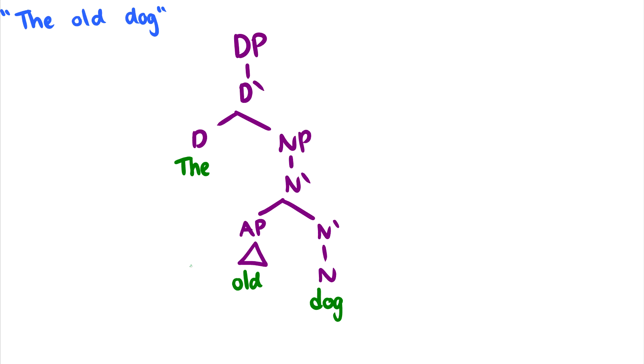And then everything else works just the same way as before. Again, let's remember that this triangle, which I'm going to start using more frequently now, just means that everything below it, all the structure below it, we're just kind of ignoring it. So in this case, we could have written AP A bar to A, but that's a lot to write, so we just abbreviate it with the triangle.